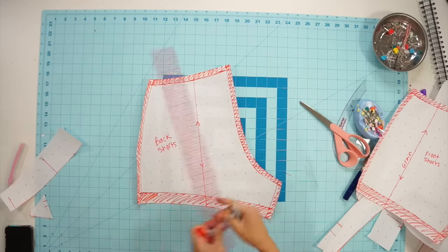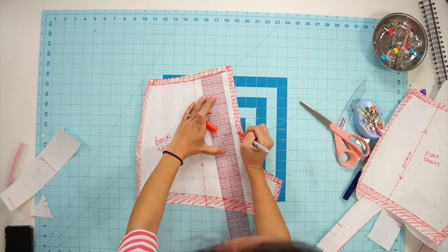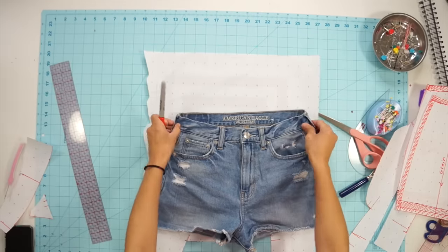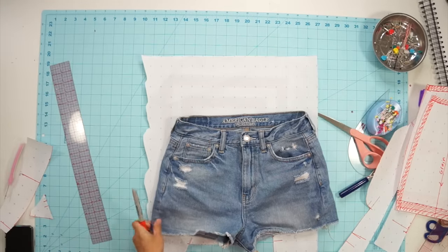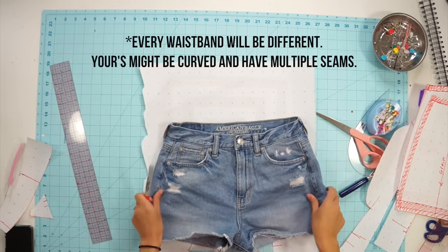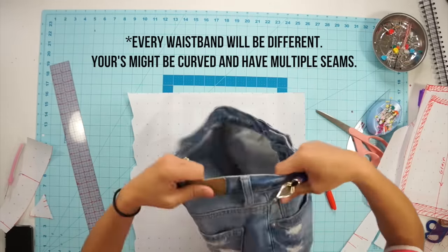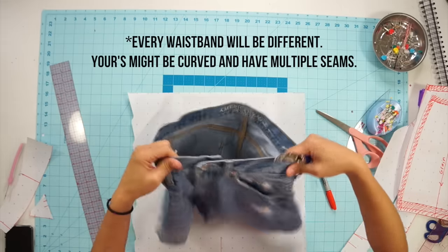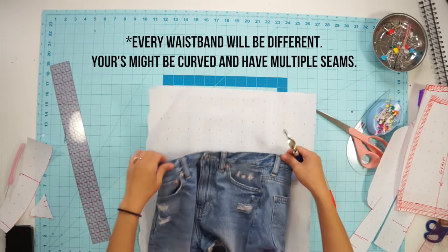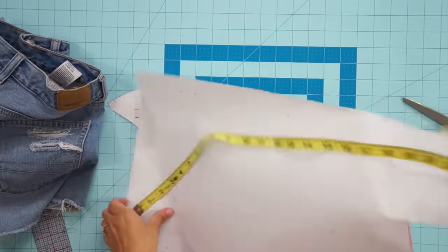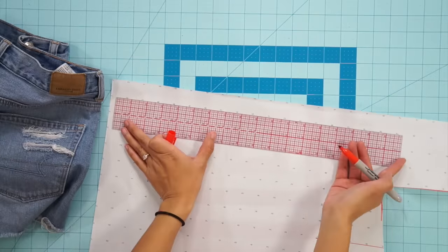If you're adding a zipper you can go ahead and place the marking for it on your pattern as well. For the waistband of the shorts at first it looks curved but if you pay attention to the details the waistband is one long straight piece, so all I have to do is measure how long and wide it is, mark it on paper and add my seam allowance. The pattern piece for this is going to look like one long straight strip.